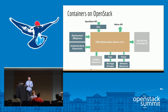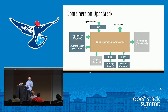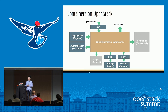What Kuryr provides in general is a set of plugins for different COEs. When a COE wants to set up networks, it calls the plugins provided by Kuryr. The plugin receives the request from the COE and translates it into API calls to Neutron, and Neutron actually does the work to set up the network for the containers. For storage, there is the Fuxi project, which bridges the COEs and allows them to use Cinder or Manila for container storage.